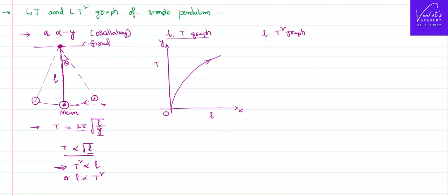What does the L-T² graph look like? If you take origin, x-axis, y-axis, length on x-axis and T² on y-axis, and if you take any particular values of L and T² and draw a graph, that will be a straight line passing through origin. These are the shapes of L-T graph and L-T² graph.